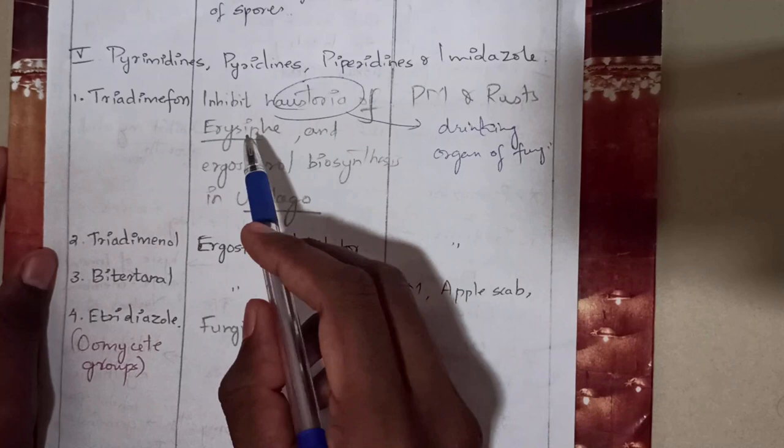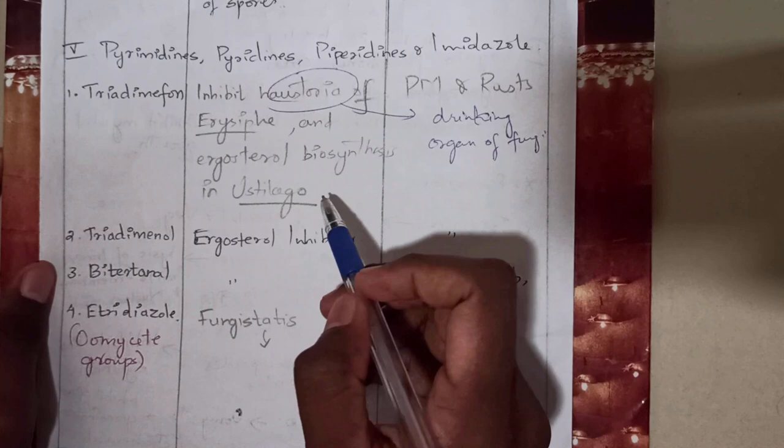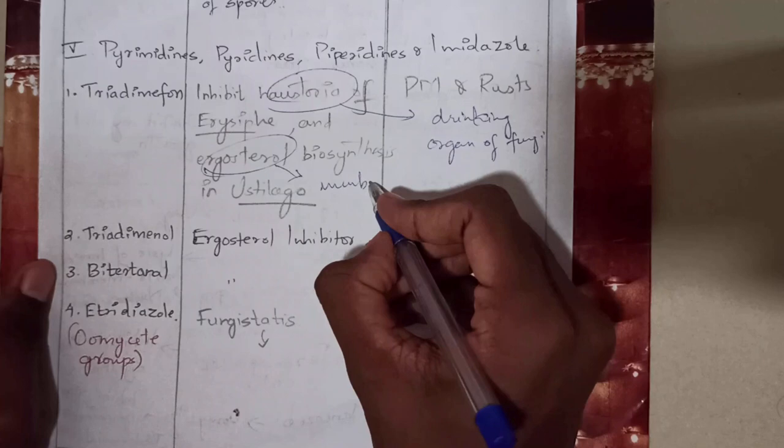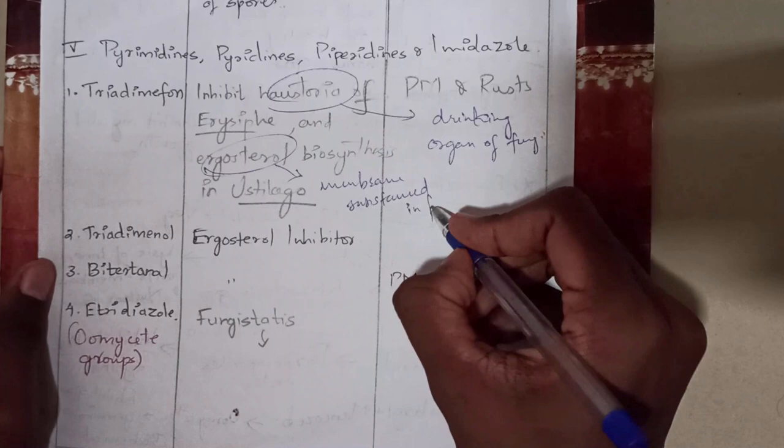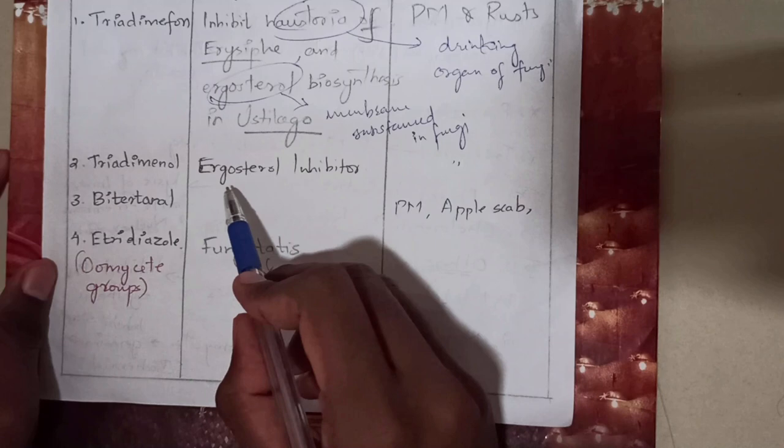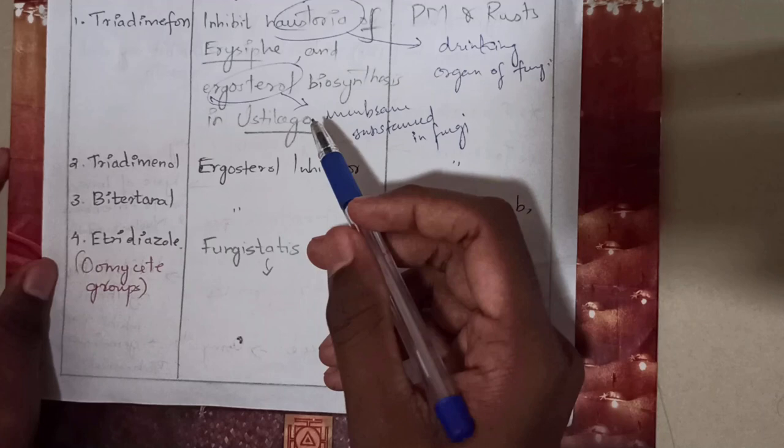Ergosterol is responsible for the membrane substance produced in fungi. The second compound is triadimenol, used against powdery mildew and rust, with the same mode of action inhibiting ergosterol. The third compound is vitetanol, which also inhibits ergosterol and is used against powdery mildew and apple scab.